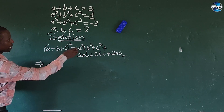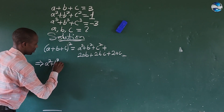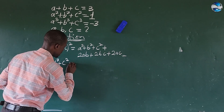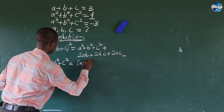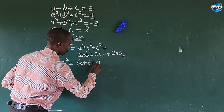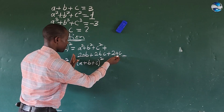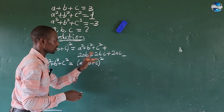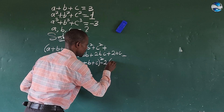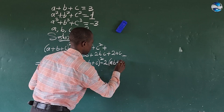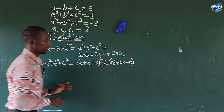We can make a squared plus b squared plus c squared the subject of the formula. So this will now give us: a squared plus b squared plus c squared equals a plus b plus c, all to the power of 2, minus 2 times the quantity ab plus bc plus ac.